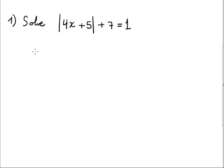Then the solution is you solve the absolute value part. Isolate. You're moving 7 to the right hand side. It's 1 minus 7. Then 4x plus 5 equals negative 6.